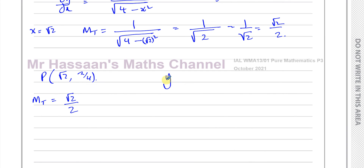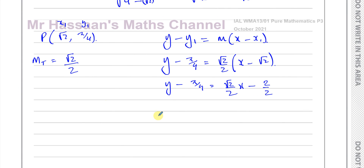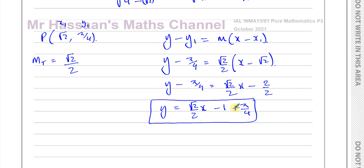Using the equation of a straight line y minus y1 = m(x minus x1), with point (root 2, pi over 4) and gradient root 2 over 2: y minus pi over 4 = (root 2 over 2)(x minus root 2). Expanding: root 2 over 2 times minus root 2 gives minus 2 over 2 which equals minus 1. So y = (root 2 over 2)x minus 1 plus pi over 4. The gradient is root 2 over 2 and the y-intercept is pi over 4 minus 1.